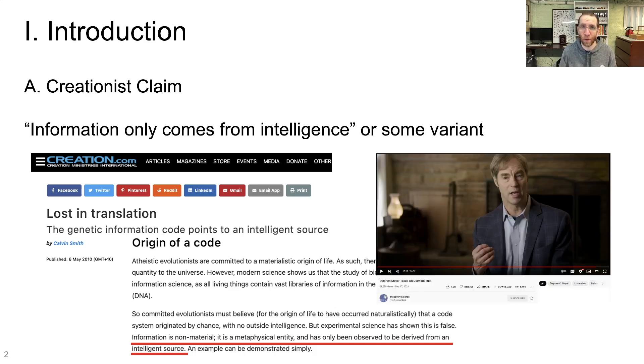We also have Dr. Stephen Meyer from Discovery Institute saying basically the same thing in this video from December of 2021. I will let him explain in his own words. Now what we know from our uniform and repeated experience, which is the basis of all scientific reasoning about the past, is that information, especially in a digital form, always comes from an intelligent source. Whether we're talking about a paragraph in a book, or a section of software, or a hieroglyphic inscription, or even information embedded in a radio signal. Whenever we see information and we trace it back to its ultimate source, we inevitably find a mind, not a material process.